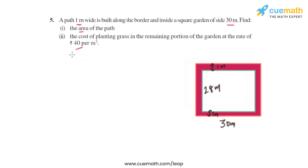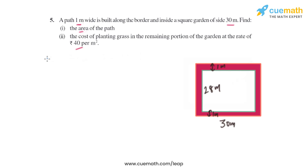The width of the path is uniform, that is 1 meter, and it is inside the square garden. To find the area of the path — shown in red — we can subtract the area of the smaller square from the area of the bigger square. For that, we need the sides of both the bigger and the smaller square.